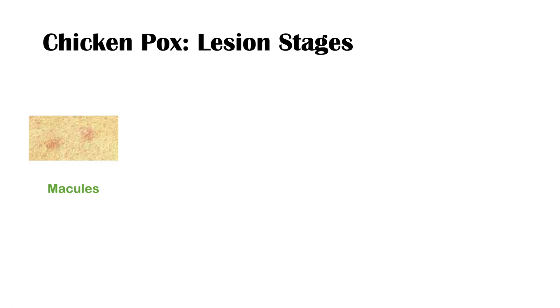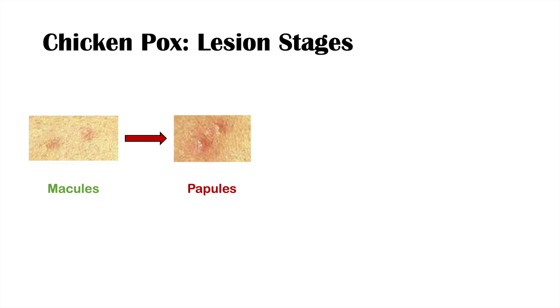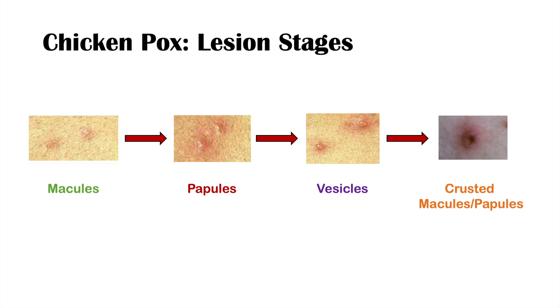The stages of skin lesions in chickenpox begin with macules, which can occur within 24 hours of the end of the incubation period — around day 15. These macules rapidly progress into papules, which are raised. The papules then form into fluid-filled vesicles, and eventually these vesicles erupt and crust over, becoming crusted macules or papules. This is the general progression of chickenpox lesions.